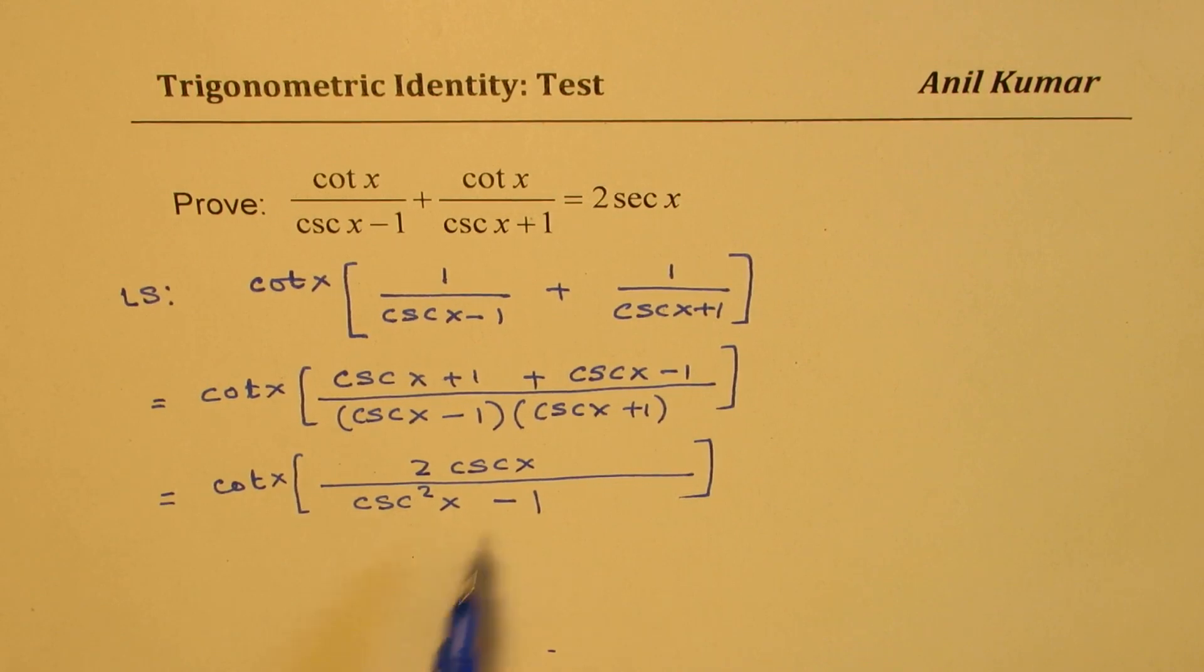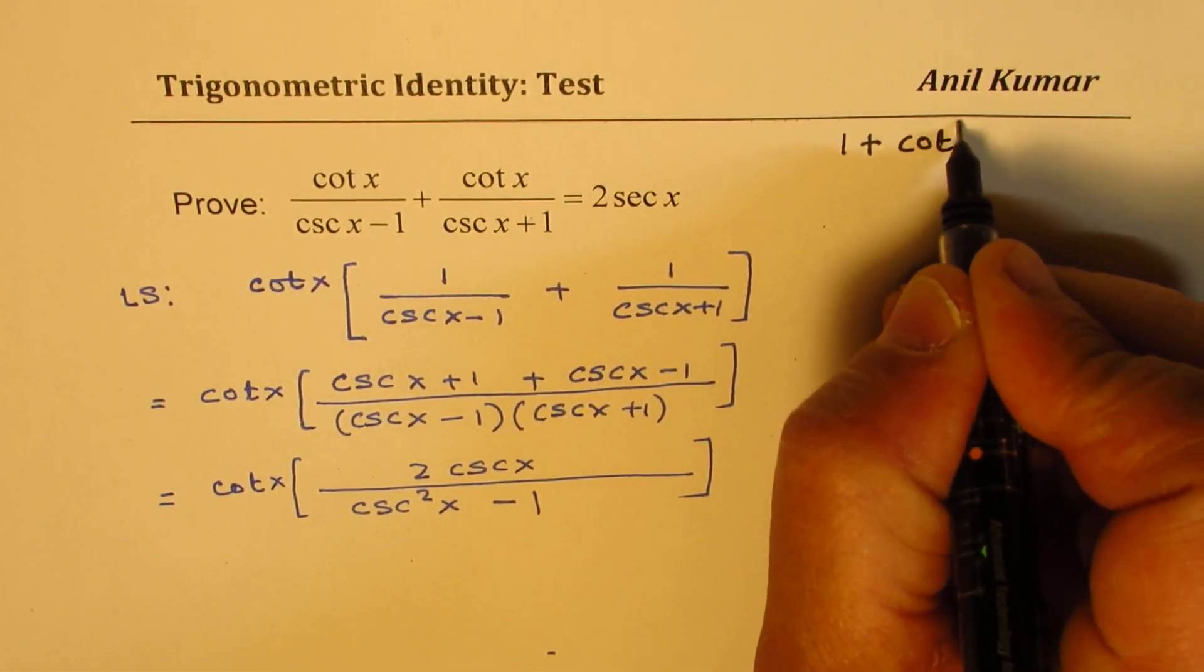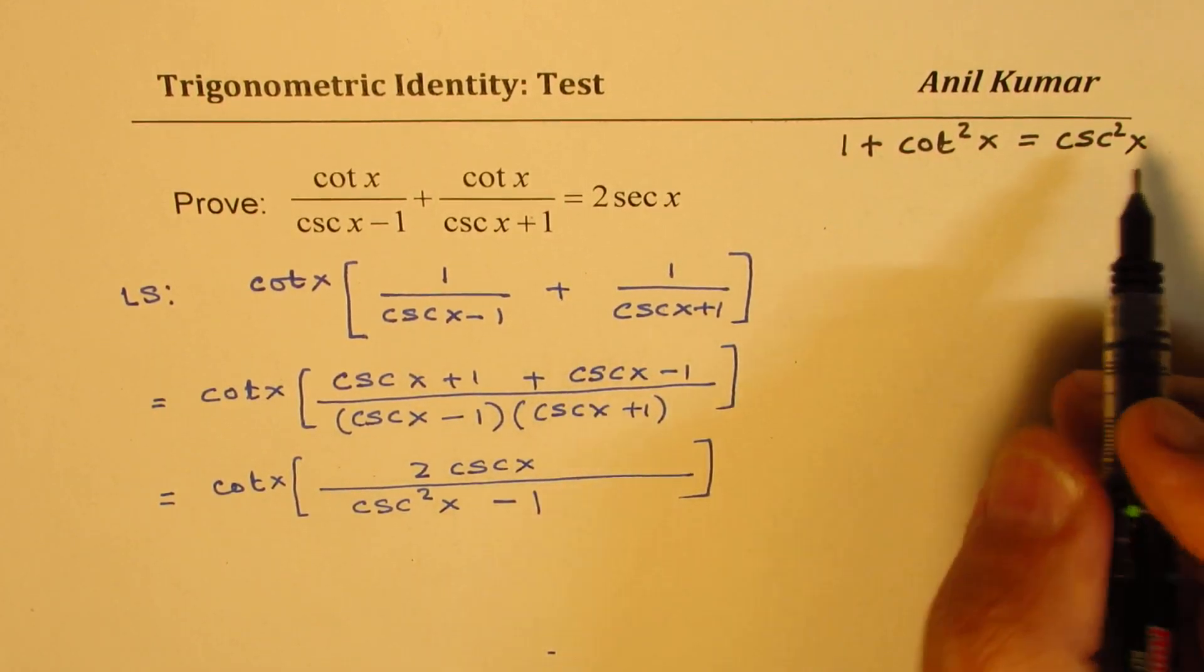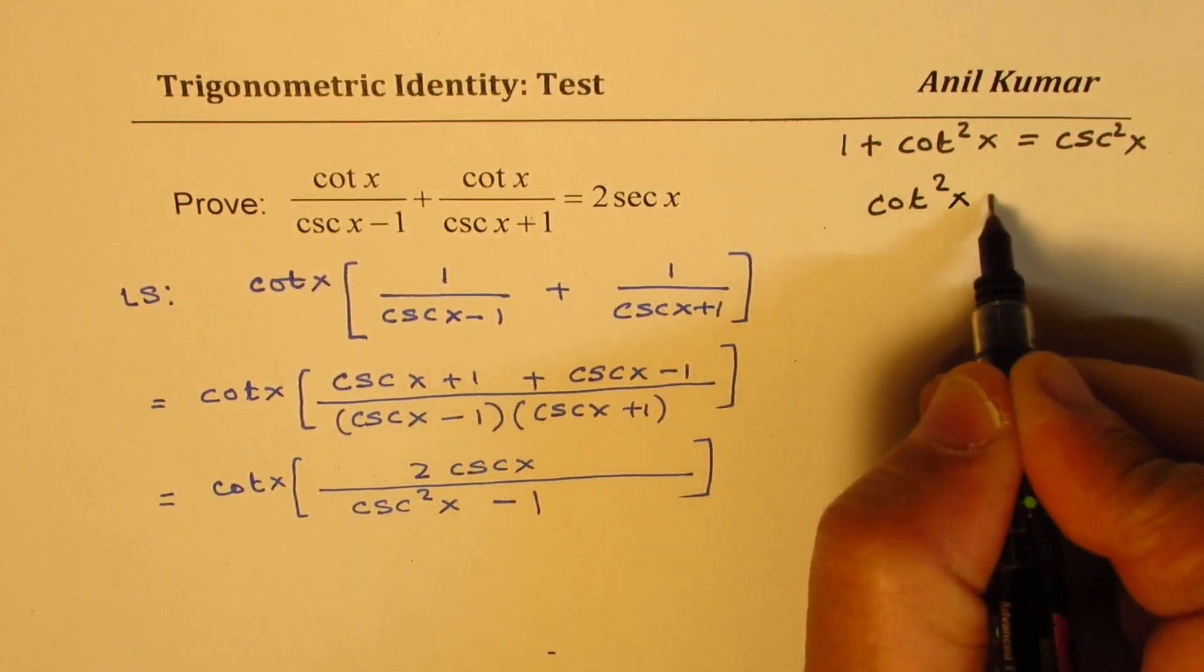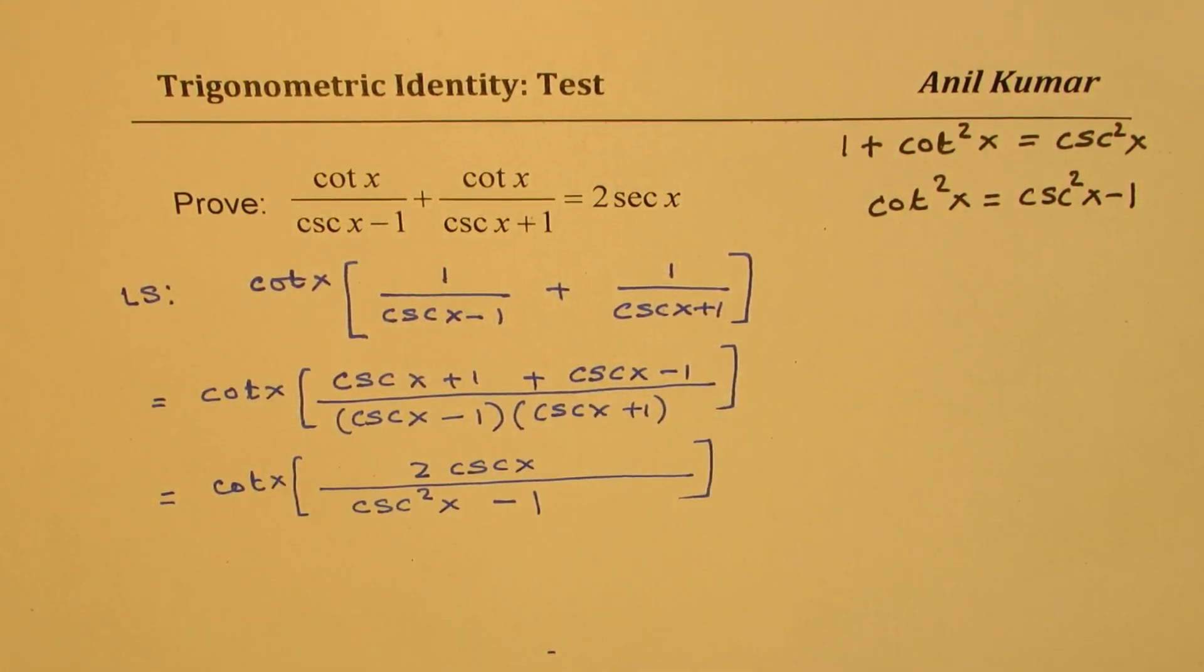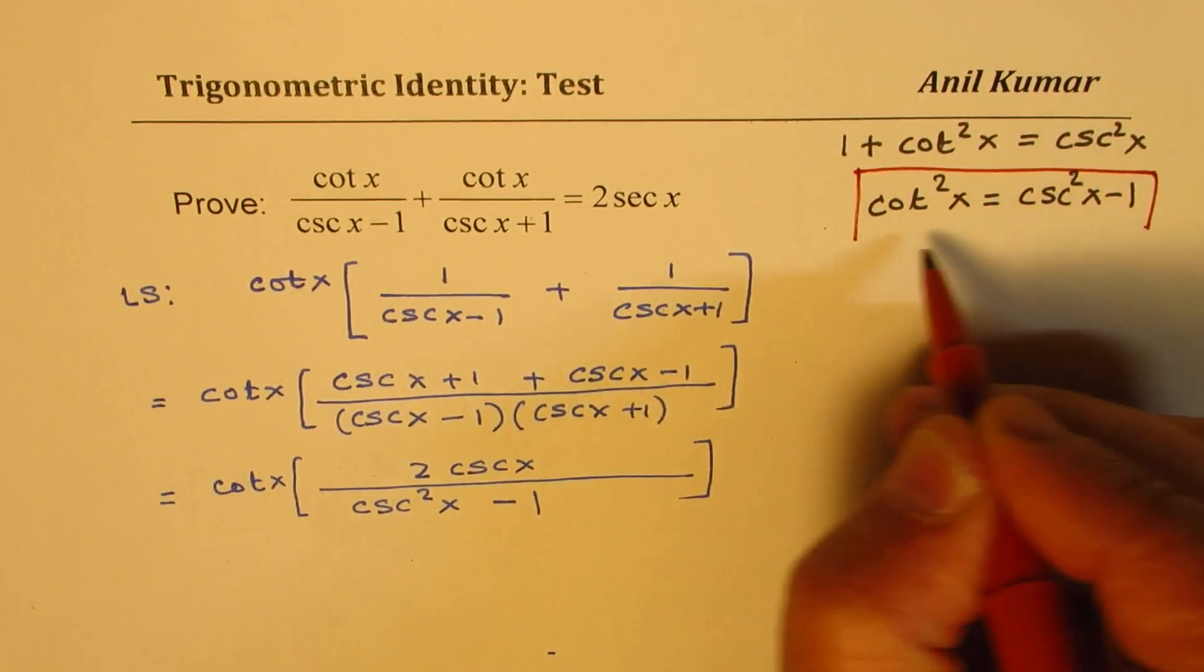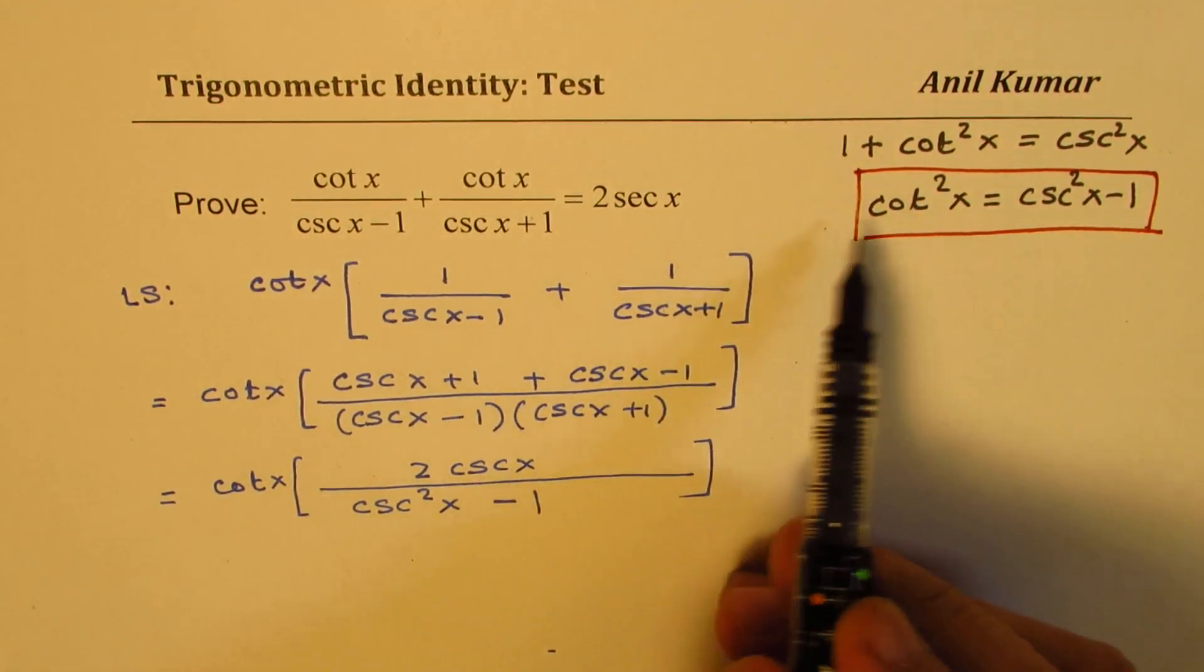Now what is cosecant square x minus 1? So I hope you remember the Pythagorean trigonometric identity, which is 1 plus cot square x equals to cosecant square x. So if I simplify for cot square x, I get cot square x as equal to cosecant square x minus 1. So cosecant square x minus 1 can be replaced by cot square x. So that is what we are going to do. We are going to use this particular expression for cosecant square x minus 1. So here we have cot square x.